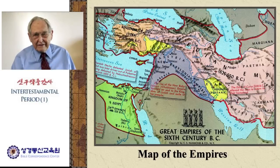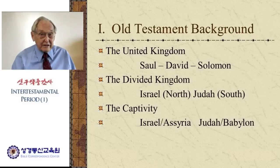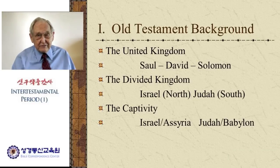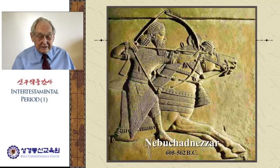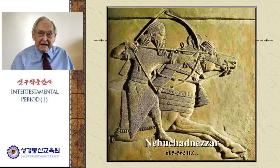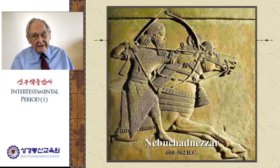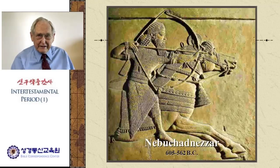The Assyrians were finally put out of business. In the year 612 BC, Nebuchadnezzar went in and destroyed the city of Nineveh, the capital of the Assyrian Empire. For all practical purposes, that was the end of the Assyrian Empire, and that was also the beginning of the Babylonian Empire.